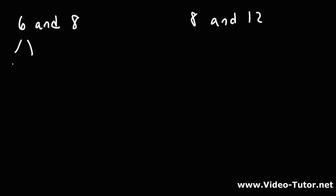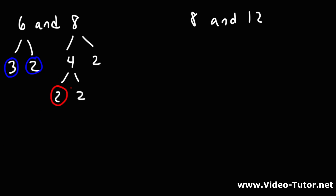The factors of 6 are 3 and 2 — 3 times 2 is 6. And for 8, it's 4 times 2, but 4 we can break into 2 times 2. So the prime factors of 6 are 3 and 2, and the prime factors of 8 are 2 times 2 times 2.